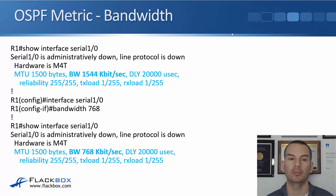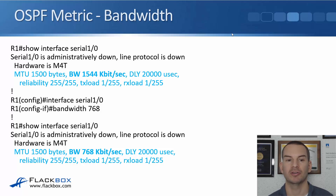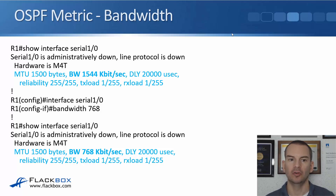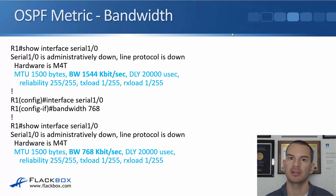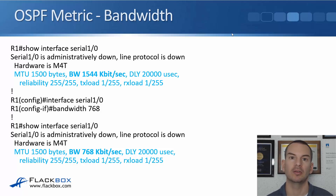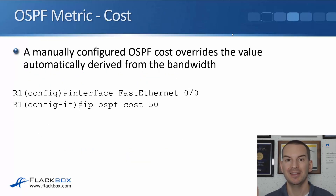To manipulate bandwidth, you can use 'show interface serial 1/0' to see the current bandwidth — 1544 kilobits per second by default on a serial interface. In interface config mode, use 'bandwidth 768' to change it. Note that setting the bandwidth does not change the actual physical speed of the interface; it only changes how IOS treats that interface for software policy. The better approach is to directly change the OSPF cost, which won't affect other software policies like QoS.